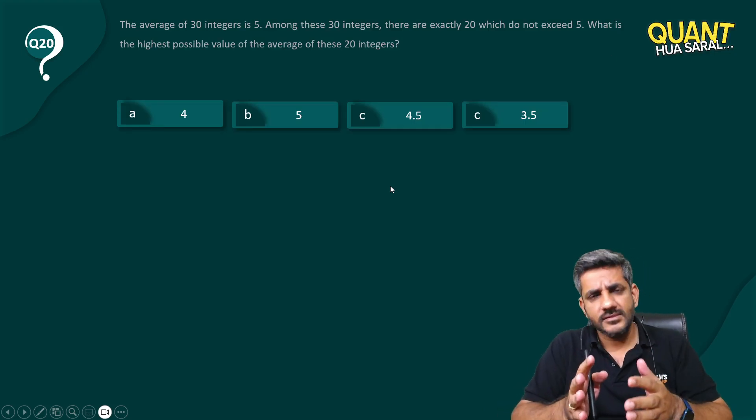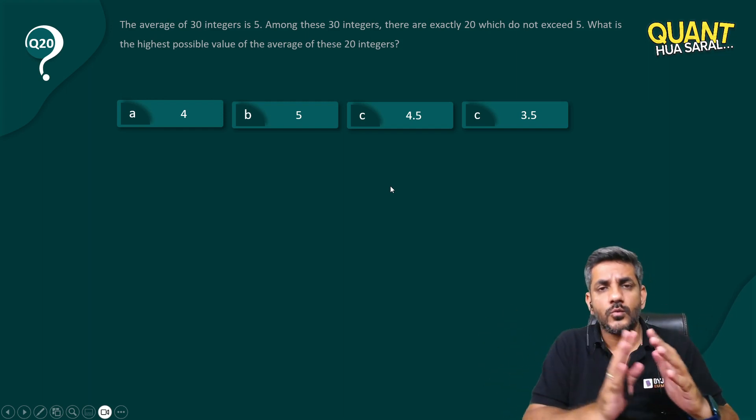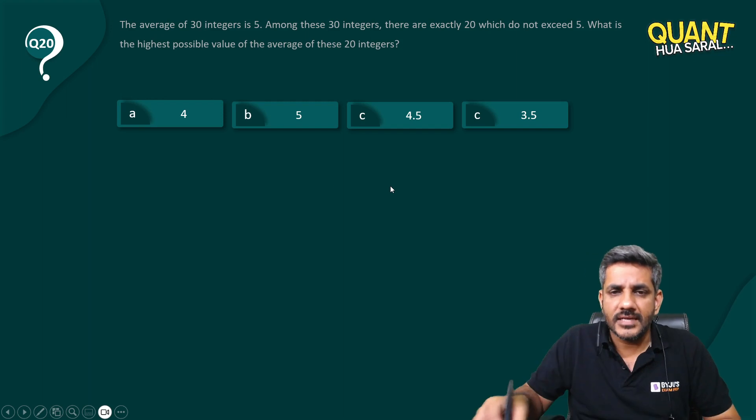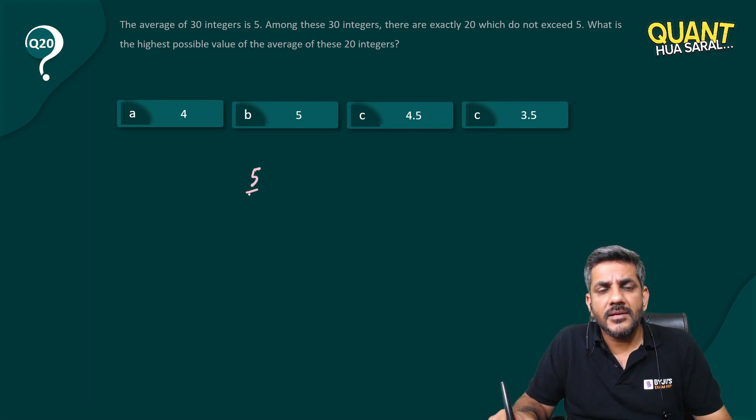So basically it's very clear. He says there are 30 integers and he has broken them into two parts. One is 20 numbers which do not exceed 5, and there are other 10 numbers as well.